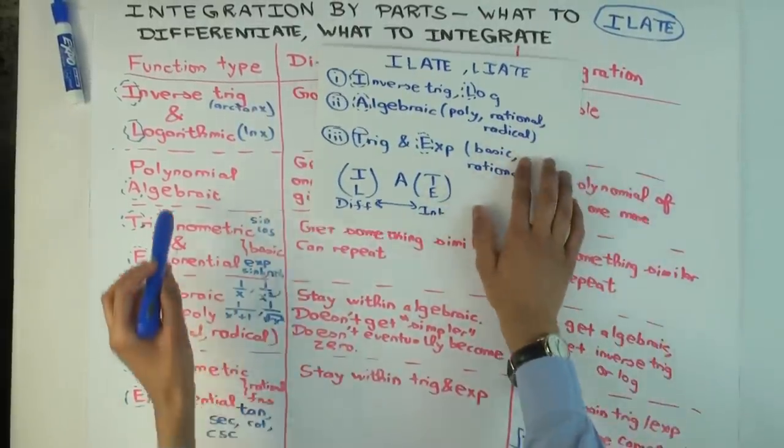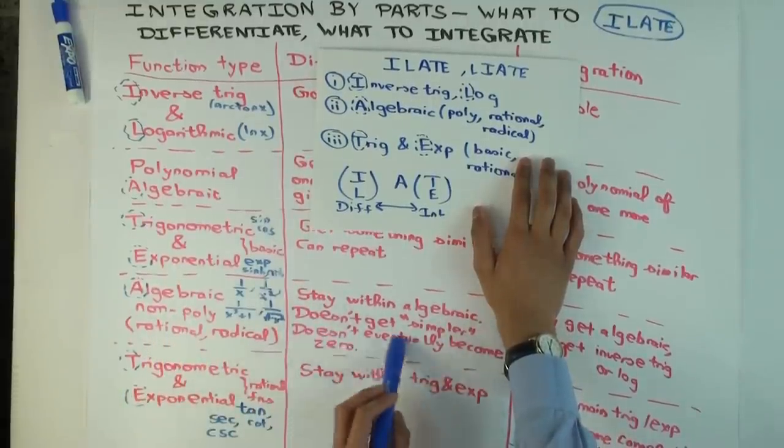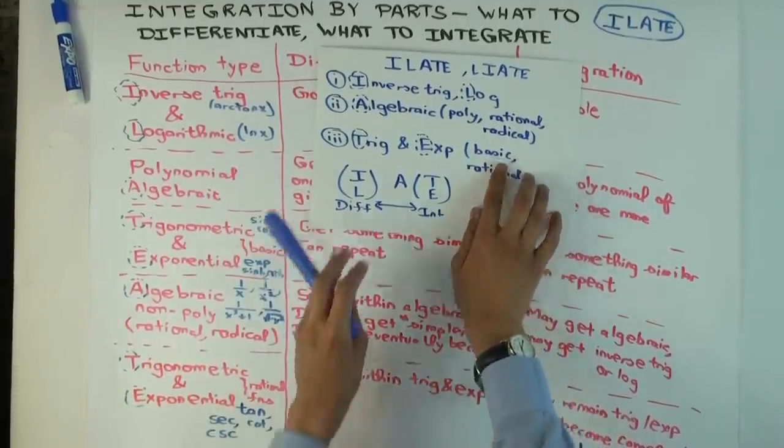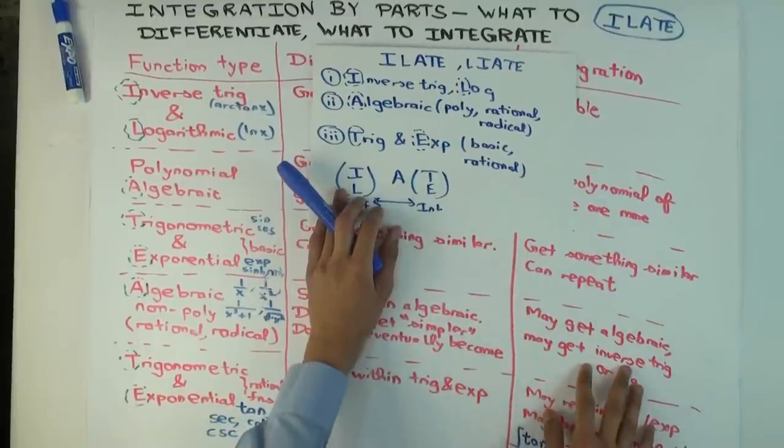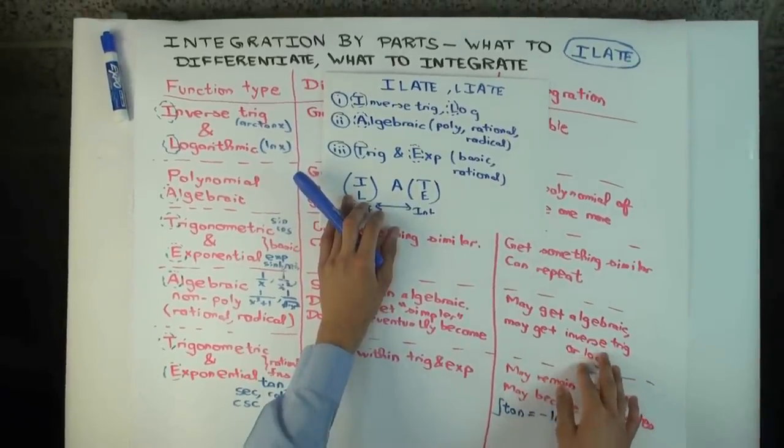And the reason is that, unlike the polynomials, these types of algebraic functions, you can keep differentiating, they don't eventually become zero. Okay? And when you integrate these types of algebraic functions, you may go outside the algebraic domain to the inverse trig or log.